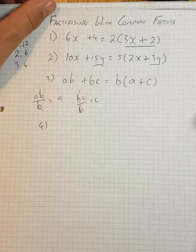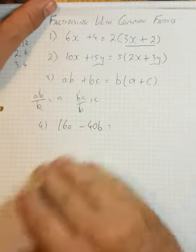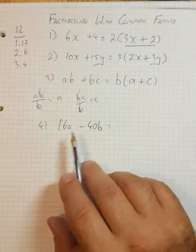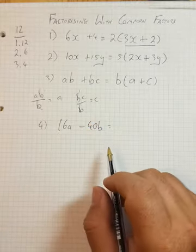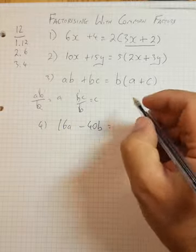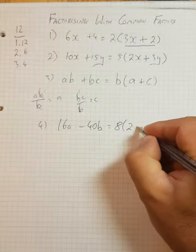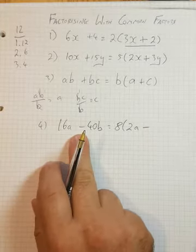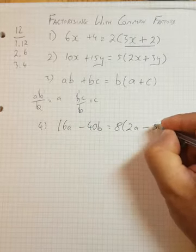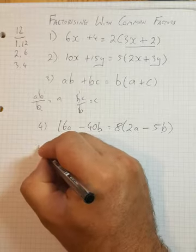What about this one? So what is the biggest number that goes into these? Well, 2 goes into both of them, but is it the biggest number? 4 goes into both of them, but is there a bigger number? 8 goes into both of them. 8 goes into 16 and 8 goes into 40. So 8 is our highest common factor. 16A divided by 8. 16 divided by 8 is 2A. Minus. Why have I got a minus this time? Because I had a minus in the question. There's a minus here, so there's a minus in the bracket. 40B divided by 8 is 5B or minus 5B.